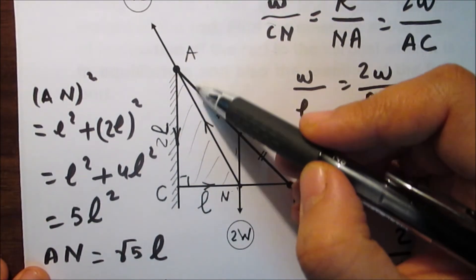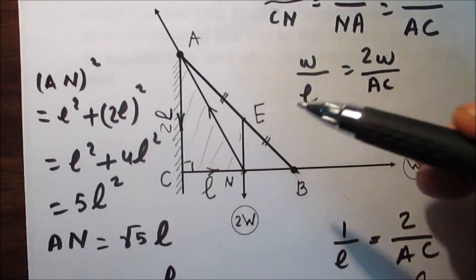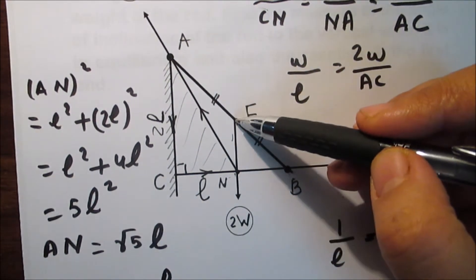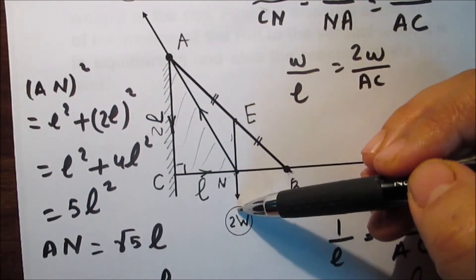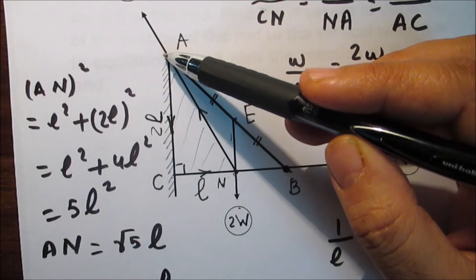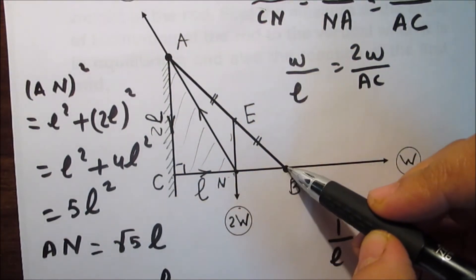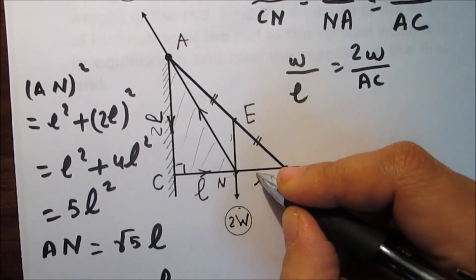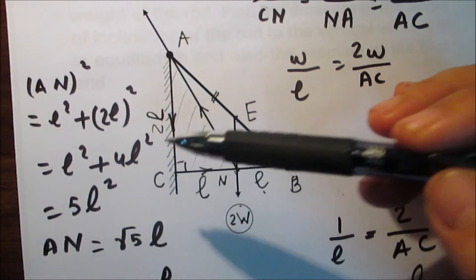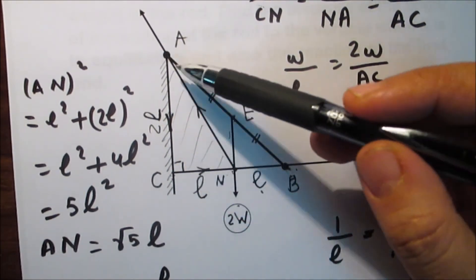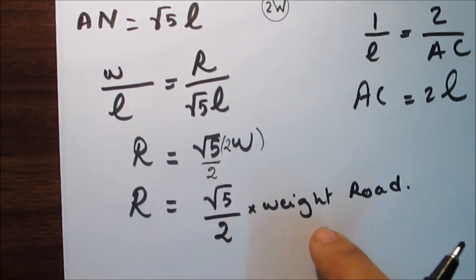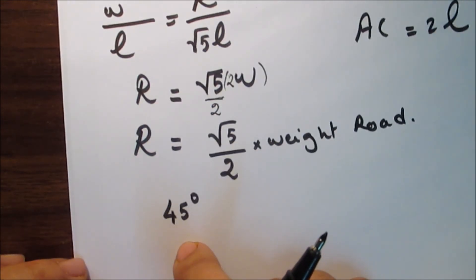Now find the angle of inclination of the rod to the vertical. The weight is applied at midpoint E of AB, and since the weight is vertical, EN is vertical and parallel to AC. Since EN passes through the midpoint of AB, N is the midpoint of BC. Therefore NB equals CN equals l, so BC equals 2l, which equals AC. Triangle ACB is an isosceles right triangle, so angle A equals 45°. The reaction at the first end is (√5 / 2) times the weight of the rod, and the rod inclines at 45° to the vertical.